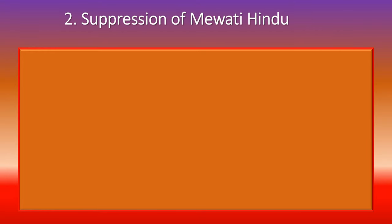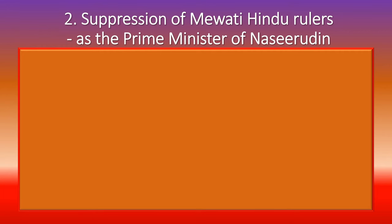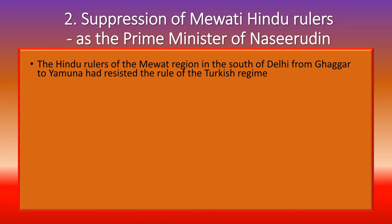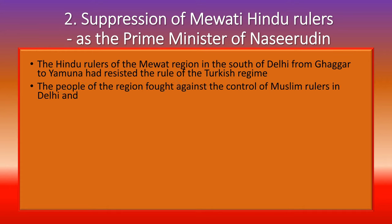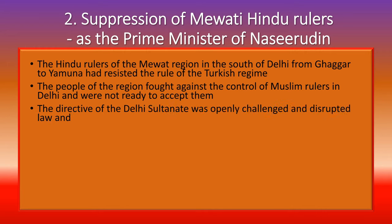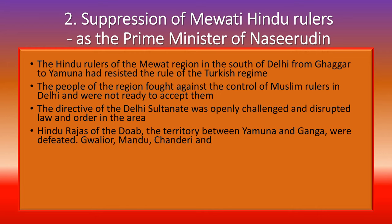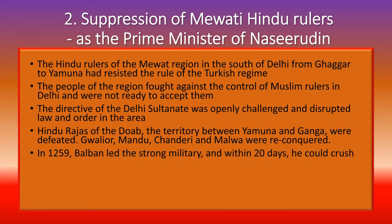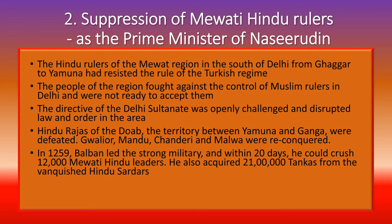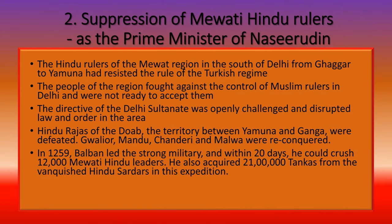The Hindu rulers of the Mevat region, south of Delhi from the Ghaggar to the Yamuna, had resisted Turkish rule. The people of the region fought against Muslim rulers in Delhi and were not ready to accept them. Balban led a strong military campaign and within 20 days crushed 12,000 Mevati Hindu leaders. He also acquired 21 lakh tankas from the vanquished Hindu sardars. Hindu rajas of the Doab — the territory between Yamuna and Ganga — were defeated, and Gwalior, Mandu, Chanderi, and Malwa were reconquered in 1259.